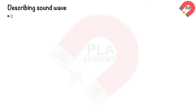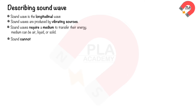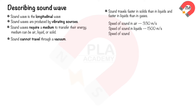Describing sound waves. Sound is a longitudinal wave, meaning particles of the medium vibrate in the same direction as the wave travels. Sound waves are produced by vibrating sources that create pressure variations in the surrounding medium. Sound waves require a medium to transfer energy — the medium can be air, water, or any solid or liquid — which is why sound cannot travel through a vacuum. Sound travels faster in solids than in liquids, and faster in liquids than in gases.